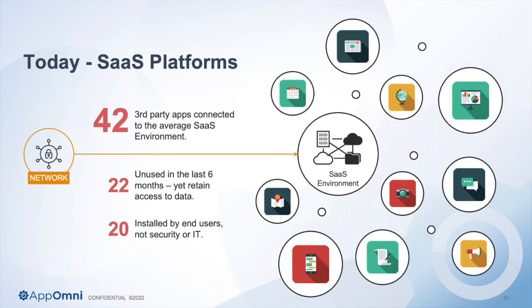Then we look at how did these SaaS applications get in there? 20 of that 42 — so roughly half of them — were installed without any IT or security oversight. This is end users directly installing applications either through the App Store or connecting via OAuth. You have these apps in your production environment with part of your users' credentials, and the IT team doesn't even know what these applications are, and the security team has no visibility. This is not the exception. This is the rule.